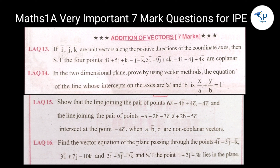Next we will choose addition of vectors. i, j, k are unit vectors along the positive directions of the coordinate axes. Then solve that the four points 4a + 5j + k, −j − k, 3i + 9j + 4k, and −4i + 4j + 4k are coplanar. And next question: in the two-dimensional plane, prove by using vectors method the equation of the line whose intercepts on the axes are a and b is x/a + y/b = 1.